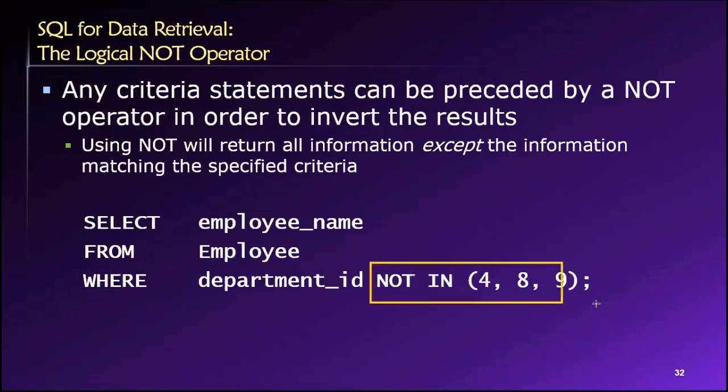So by saying NOT IN this set, the department ID in this case would need to be anything but 4, 8, or 9 in order for that employee to be included in the results. So we'll see an example of this.